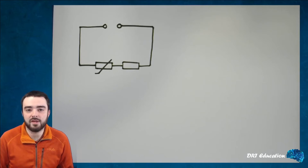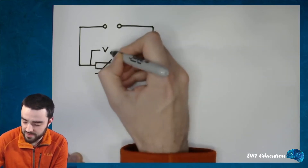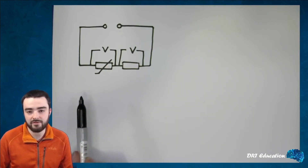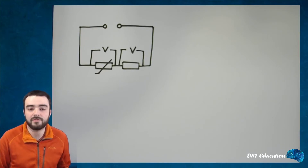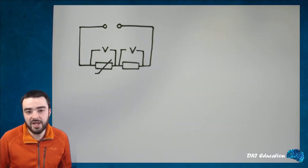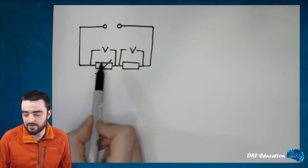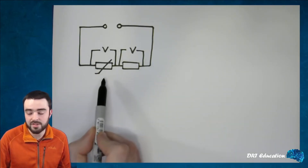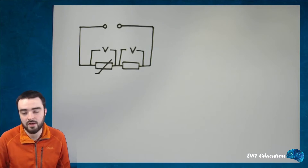If we have a thermistor in a circuit with another resistor and measure the voltage across each, we would see that as the temperature increases, the voltage across both of them would change. The total voltage would remain the same, however the share would be different. As the temperature increases, the resistance of the thermistor decreases, so the share of the voltage across the thermistor decreases, and the share across the fixed resistor increases.